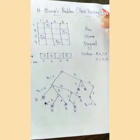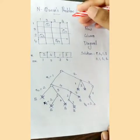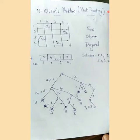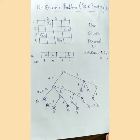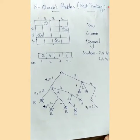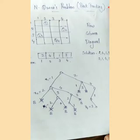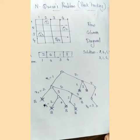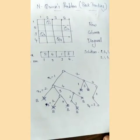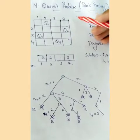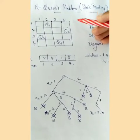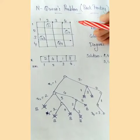We are going to discuss the N-Queens problem. The N-Queens problem is a backtracking algorithmic design technique. N is the number of queens. A queen is an important player in the chessboard.